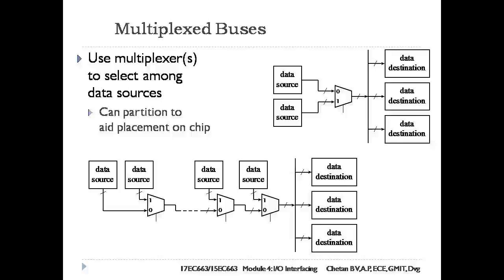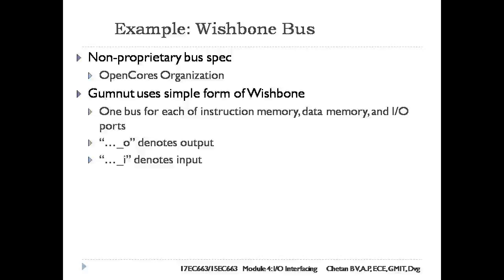The multiplexer may be implemented as a single n-input multiplexer, or it may be subdivided into sections distributed around the chip. One extreme form of subdivision of bus multiplexers is the fully distributed structure as shown in the figure. The data signals are connected in a chain going past all the sources and then routed to the destinations. An example of this kind of bus is the Wishbone bus.